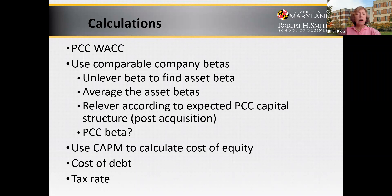You also need a cost of debt and a tax rate. Typically the parent company is stronger and can borrow money at a better rate than the target. So let's assume that once PCC is acquired by Berkshire Hathaway, it will then pay the same tax rate as Berkshire Hathaway.